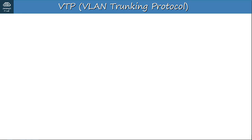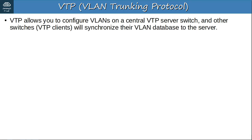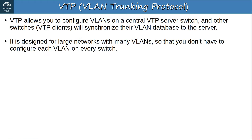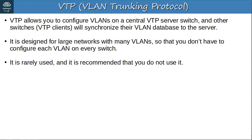Now let's move on to today's second topic: VTP, VLAN Trunking Protocol. VTP allows you to configure VLANs on a central server switch, and other switches — called VTP clients — will synchronize their VLAN database to the server. It is designed for large networks with many VLANs so you don't have to configure each VLAN on every single switch. However, like DTP, it is rarely used and it is recommended that you do not use it. There are three versions of VTP: 1, 2, and 3.